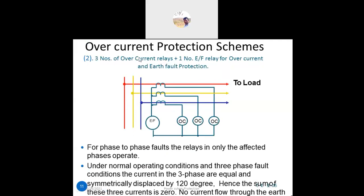Another protection scheme uses three overcurrent relays plus one earth fault relay. For phase-to-phase faults, only the affected phase relay operates. Under normal operating conditions, the three-phase currents are equal and symmetrically displaced by 120 degrees. The sum of the three-phase currents is zero, so no current flows in the earth fault relay under normal conditions.